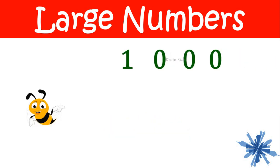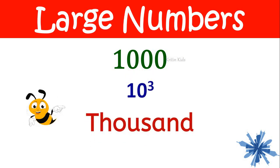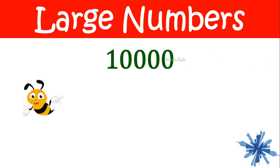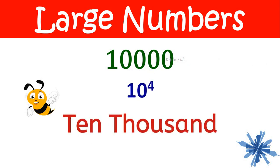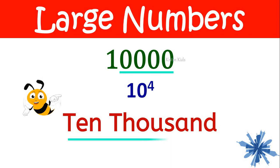If you add one more zero, it becomes thousand — that is one followed by three zeros. Now if I add one more zero here, it becomes ten thousand. One followed by four zeros is ten thousand.